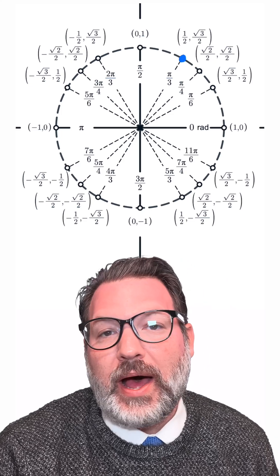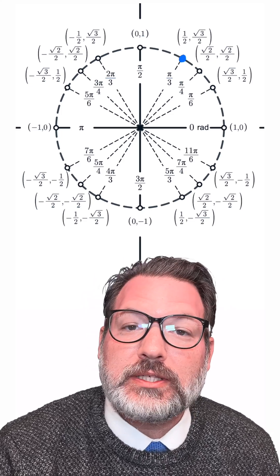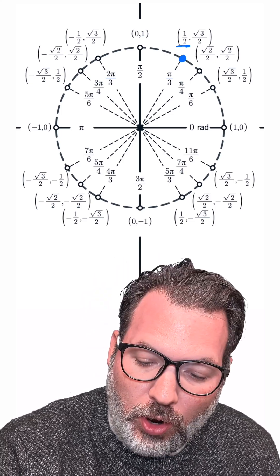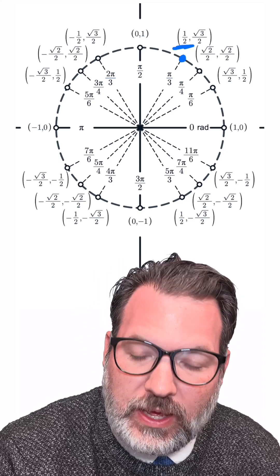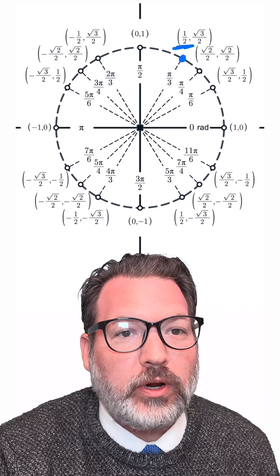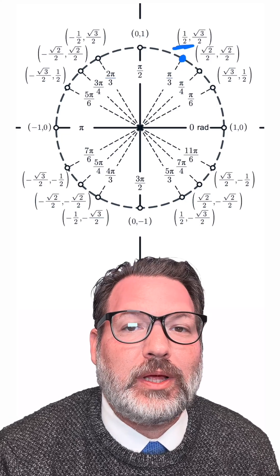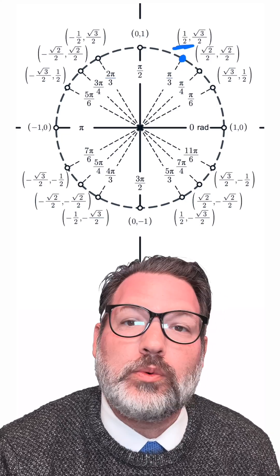For example, for an angle of pi over 3 in radians, which is the same as 60 degrees, the cosine of that angle is going to correspond to our x-coordinate on the edge of this unit circle. The x-coordinate there is 1 half, and that's why we say something like cosine of pi over 3 equals 1 half.